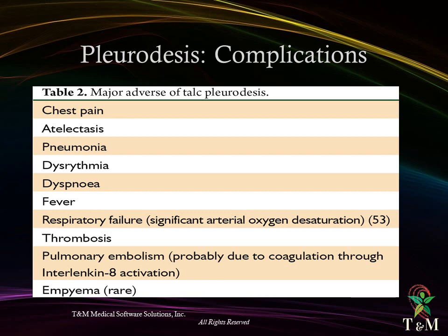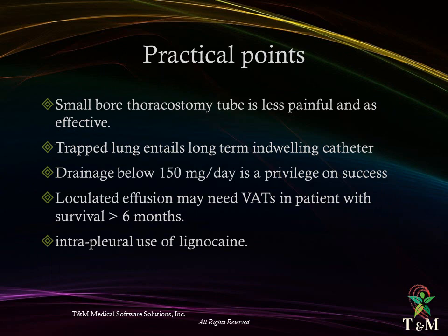Complications — major adverse effects of talc powder pleurodesis include chest pain, atelectasis, pneumonia, dysrhythmias, dyspnea, fever, respiratory failure, thrombosis, pulmonary embolism, and rarely empyema. Clinical practice points: small-bore tube drainage is less painful and equally effective. Trapped lung requires long-term indwelling catheter. Drainage below 150 ml per day is a predictor of success and calls for tube removal. Loculated pleural effusion may need video-assisted thoracoscopy in patients with survival more than 6 months. Prior to pleurodesis, intrapleural lidocaine should be given via the chest drain with a maximum dose of 3 mg per kg body weight, approximately 21 ml of 1% lidocaine solution and a maximum of 250 mg.